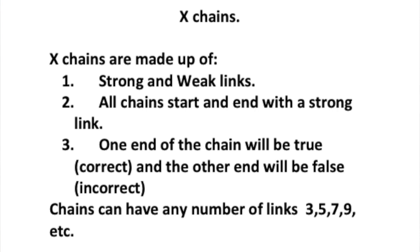X Chains are made up of strong and weak links. All chains start and end with a strong link. One end of the chain will be true, that is correct number, and the other end will be false, that is an incorrect number. Chains can have any number of links, usually odd numbers, 3, 5, 7 or 9.